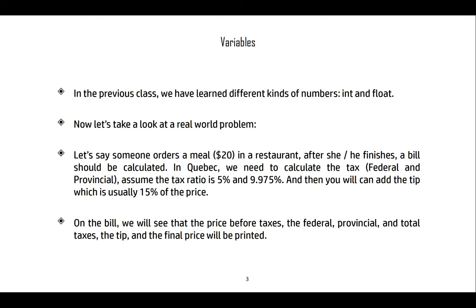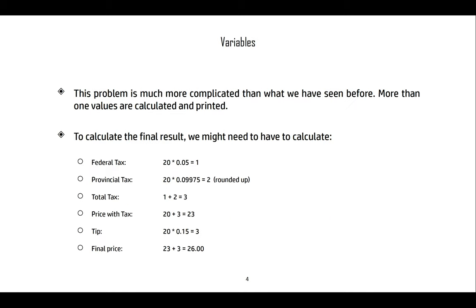We're going to look at variables through this problem. Let's say that someone orders a meal in a restaurant and after this person finishes there's a bill that should be calculated. In Quebec we need to calculate tax — federal and provincial. Assume a five percent federal tax and 9.975% provincial tax, plus a 15% tip. The bill will show the price before taxes, the federal and provincial taxes, total taxes, the tip, and the final price.